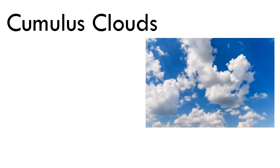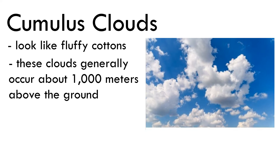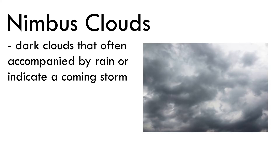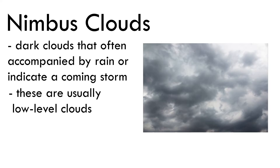Cumulus clouds look like fluffy cotton and generally occur about 1,000 meters above the ground. Nimbus clouds are dark clouds that are often accompanied by rain or indicate a coming storm. These are usually low-level clouds.